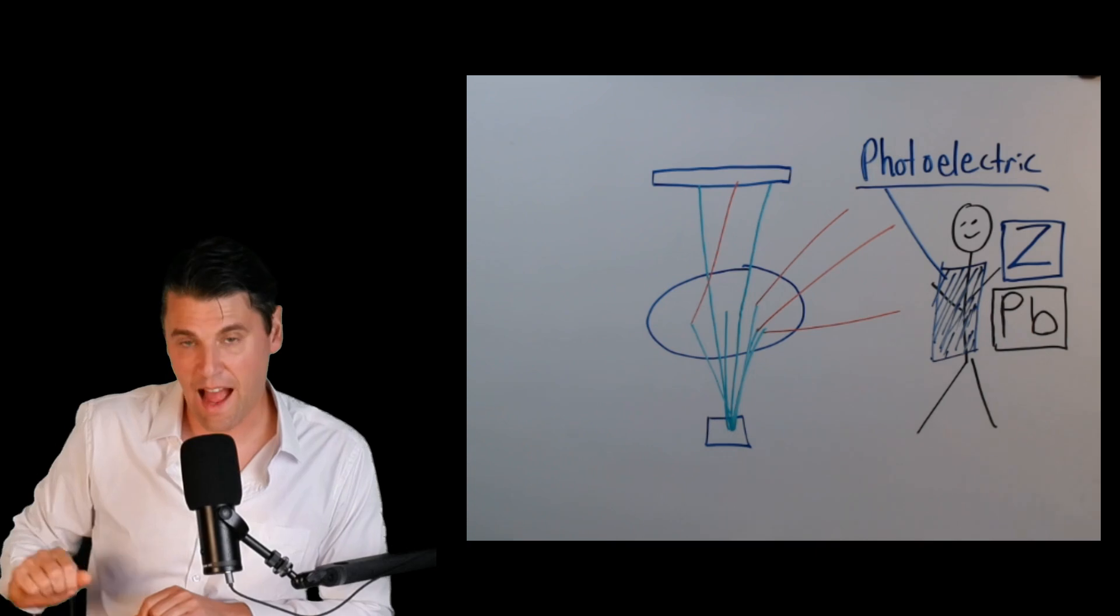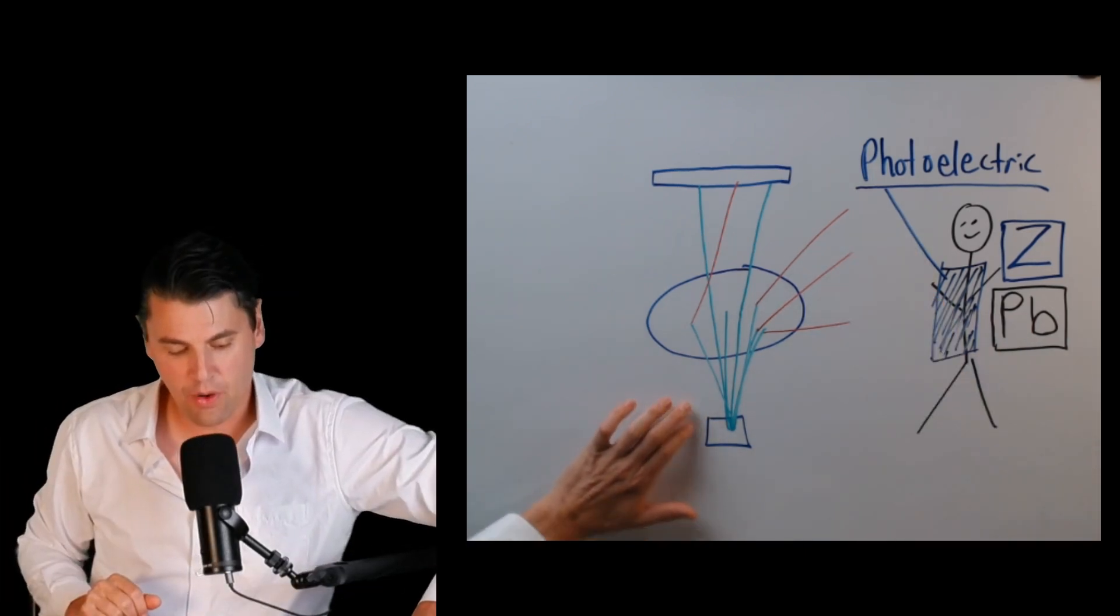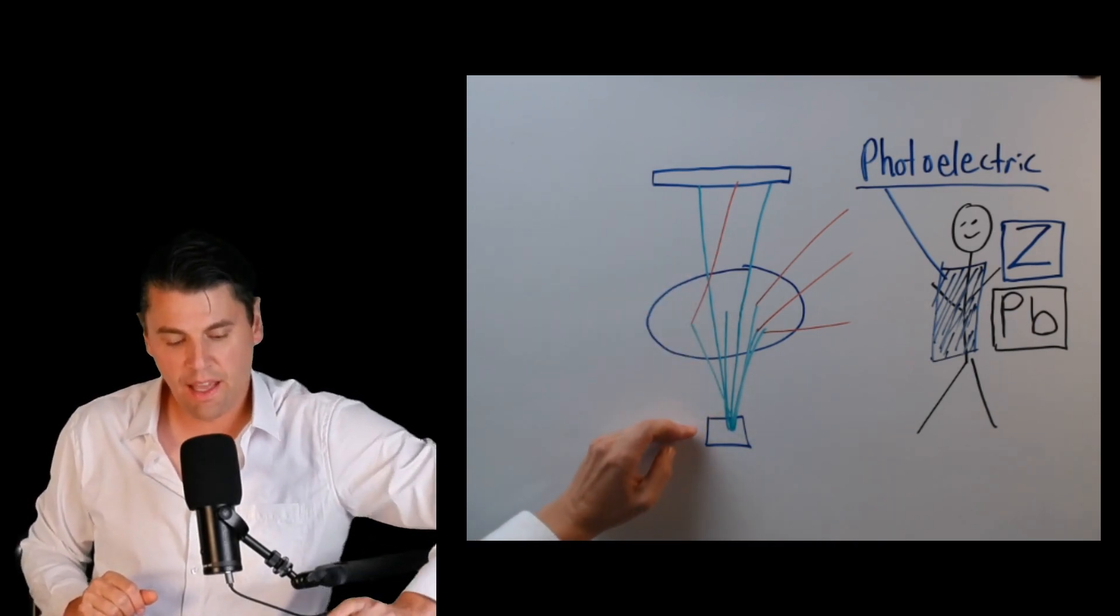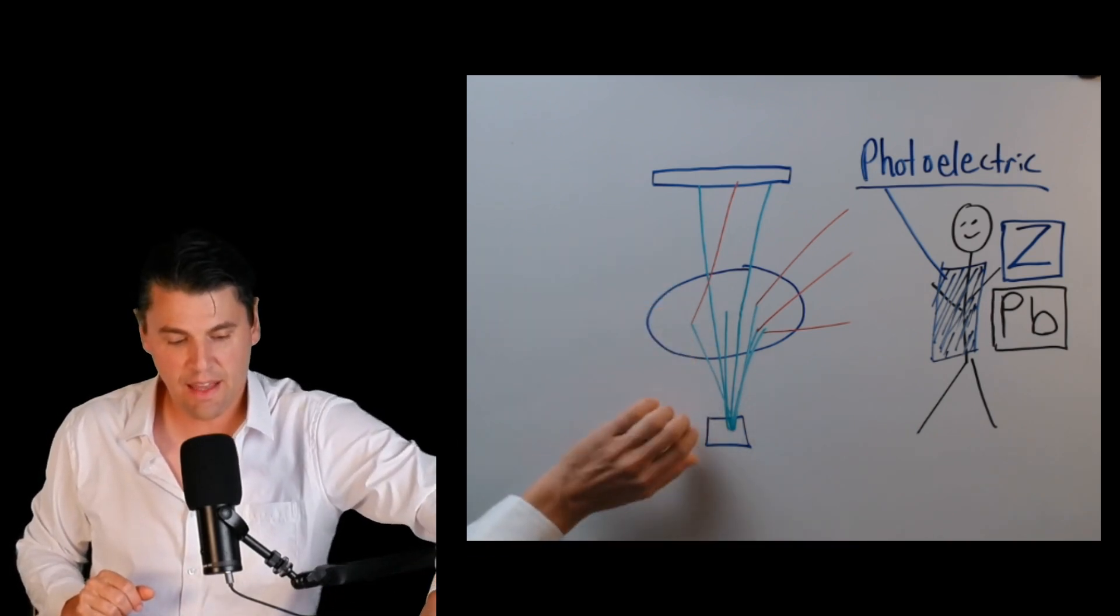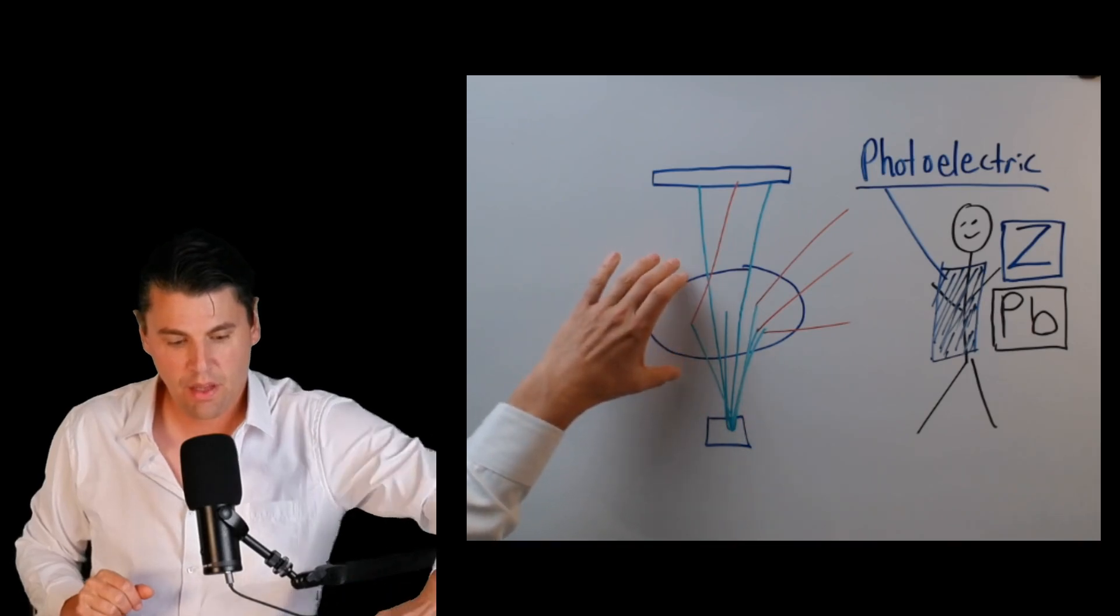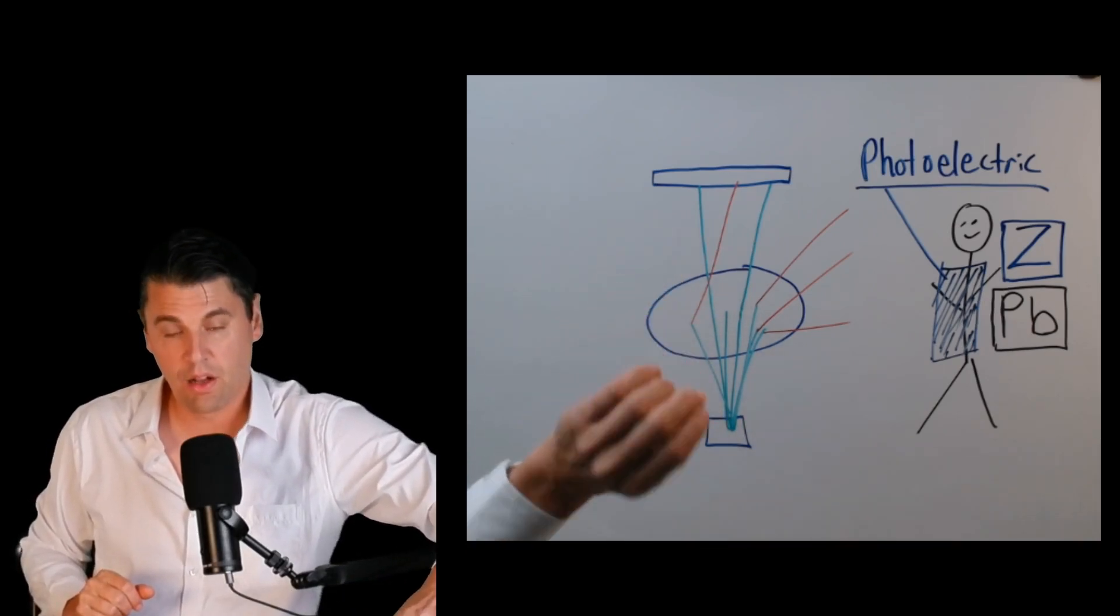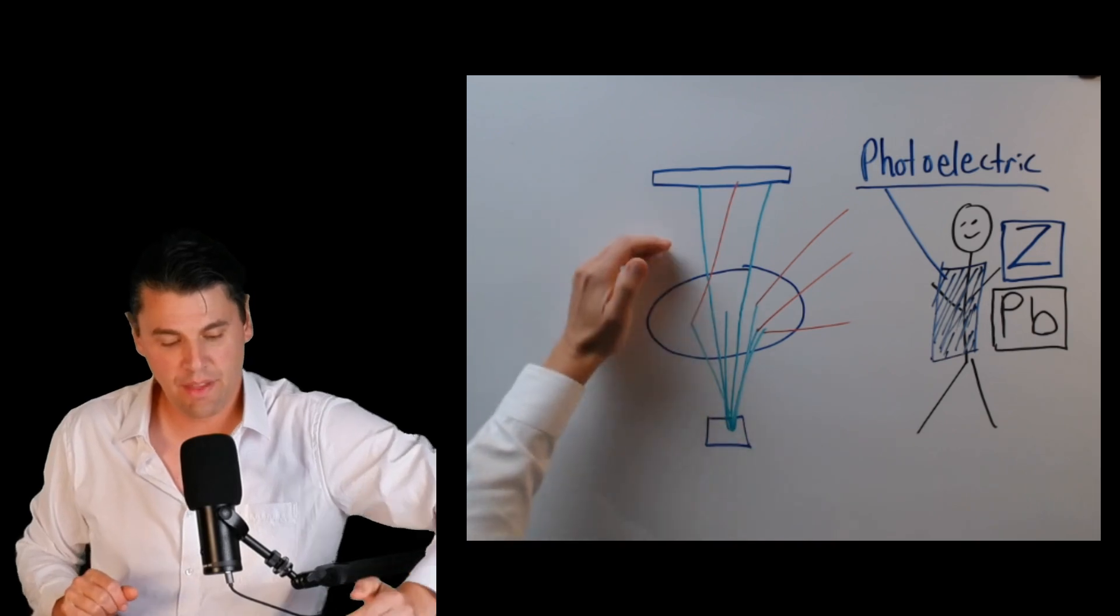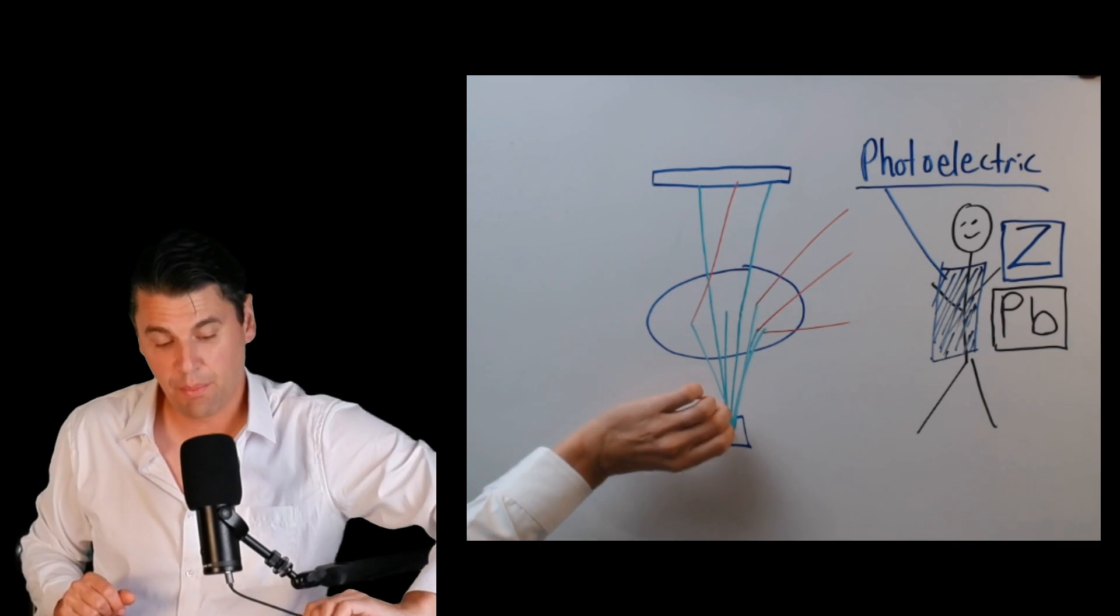Then the next question is how thick does that lead need to be? Typically in a fluoroscopy setting, we might be having x-rays with a KVP 60, 70 KVP, for instance, in order to pass through the patient, but in order to get a good contrast with our iodinated objects within the patient. If the x-rays are of the 60 to 70 KVP, remember the average energy within that is going to be lower in terms of the KEV.